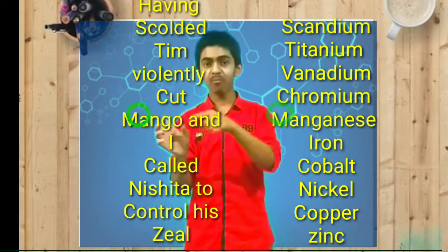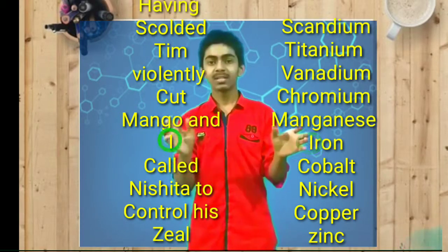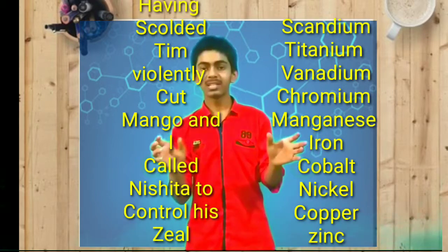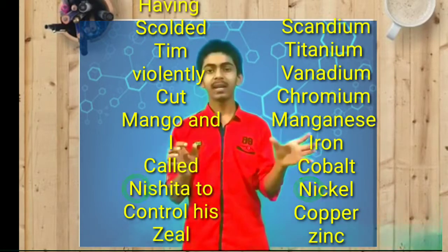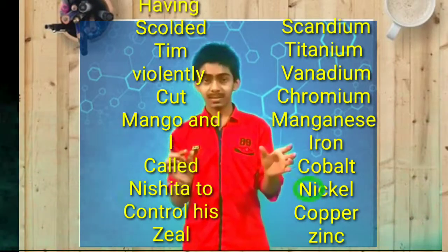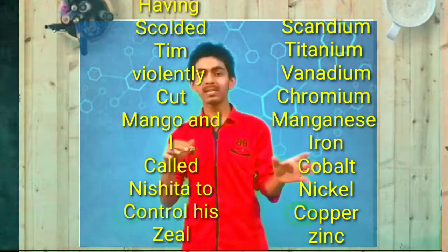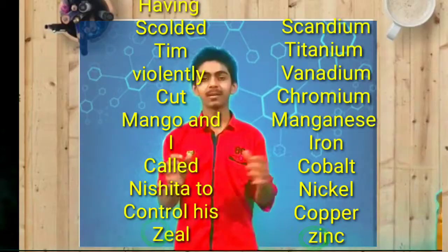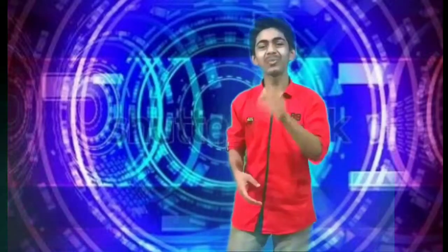And I call Nishita to control his Z. I for Iron. Coil — Co for Cobalt. Nishita — N for Nickel. Control — C for Copper. 'His' is optional. Z — Zn for Zinc. So you only need to learn three sentences to learn atomic numbers 1 to 30.